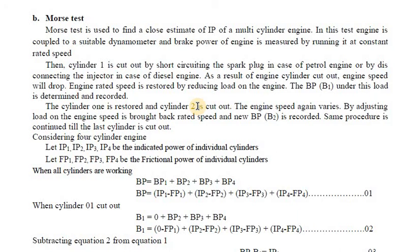To apply the Morse Test for finding indicated power of a multi-cylinder engine: first, connect the engine to a dynamometer. When all cylinders are working at constant speed, measure the total output brake power and record it. Suppose there are four cylinders — all four work simultaneously and you record the total brake power output from the crankshaft. Then, cylinder one is cut off by short-circuiting the spark plug in a petrol engine, or by disconnecting the injector in a diesel engine.